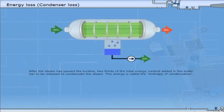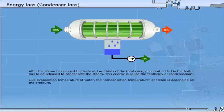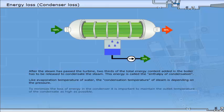After the steam has passed the turbine, two-thirds of the total energy content added in the boiler has to be released to condensate the steam. This energy is called the enthalpy of condensation. Like evaporation temperature of water, the condensation temperature of steam is dependent on the pressure. To minimise the loss of energy in the condenser, it is important to maintain the outlet temperature of the condensate as high as possible.